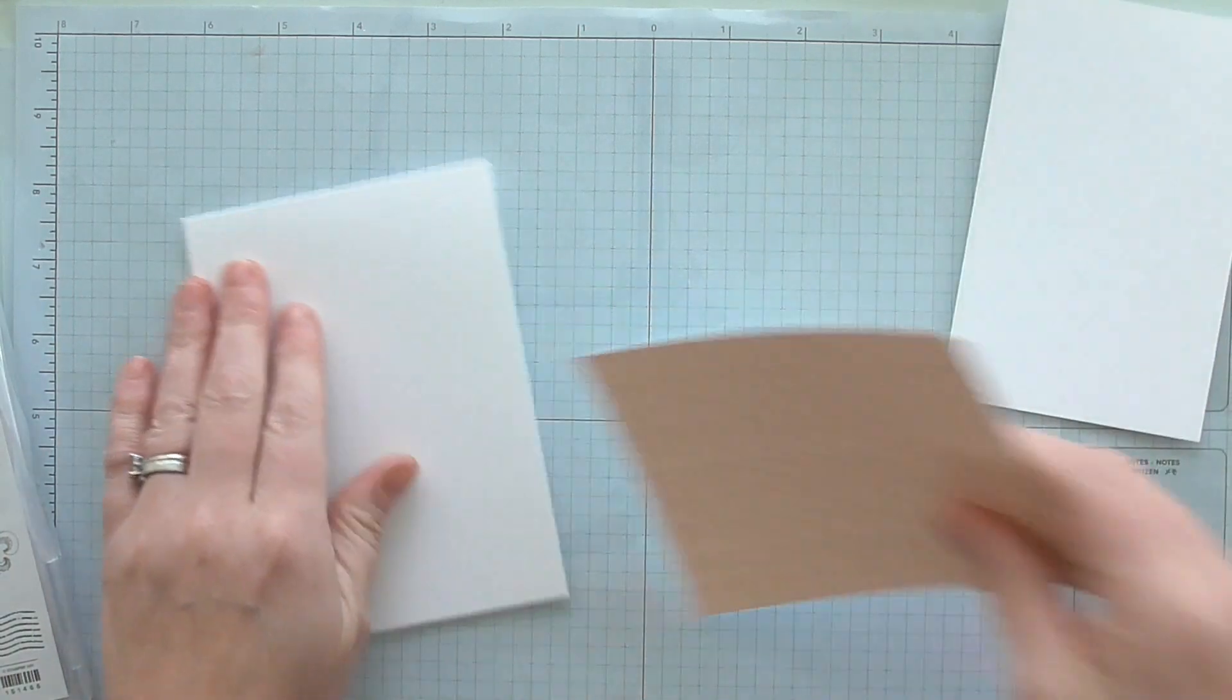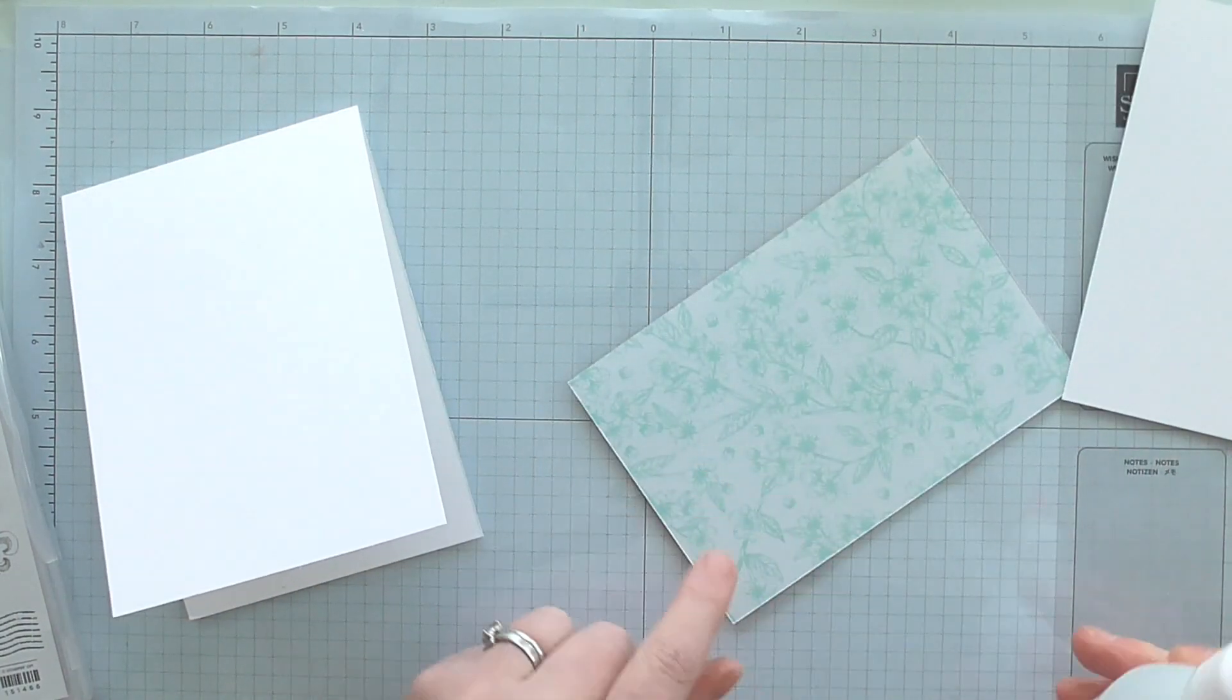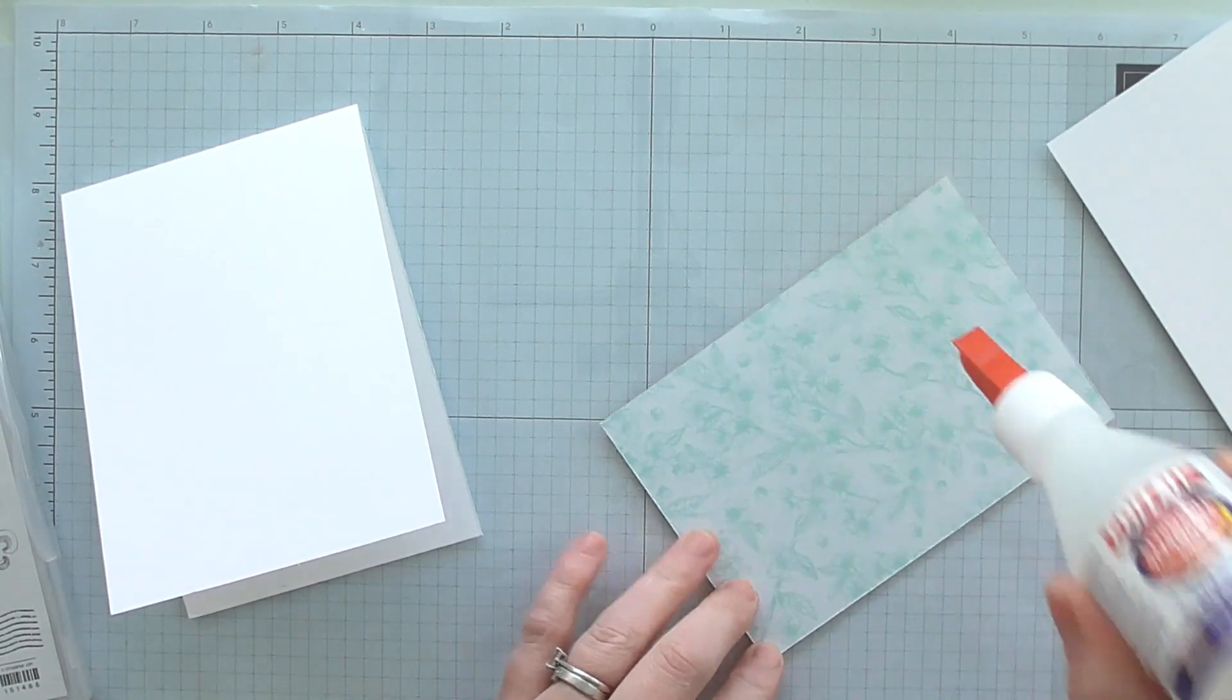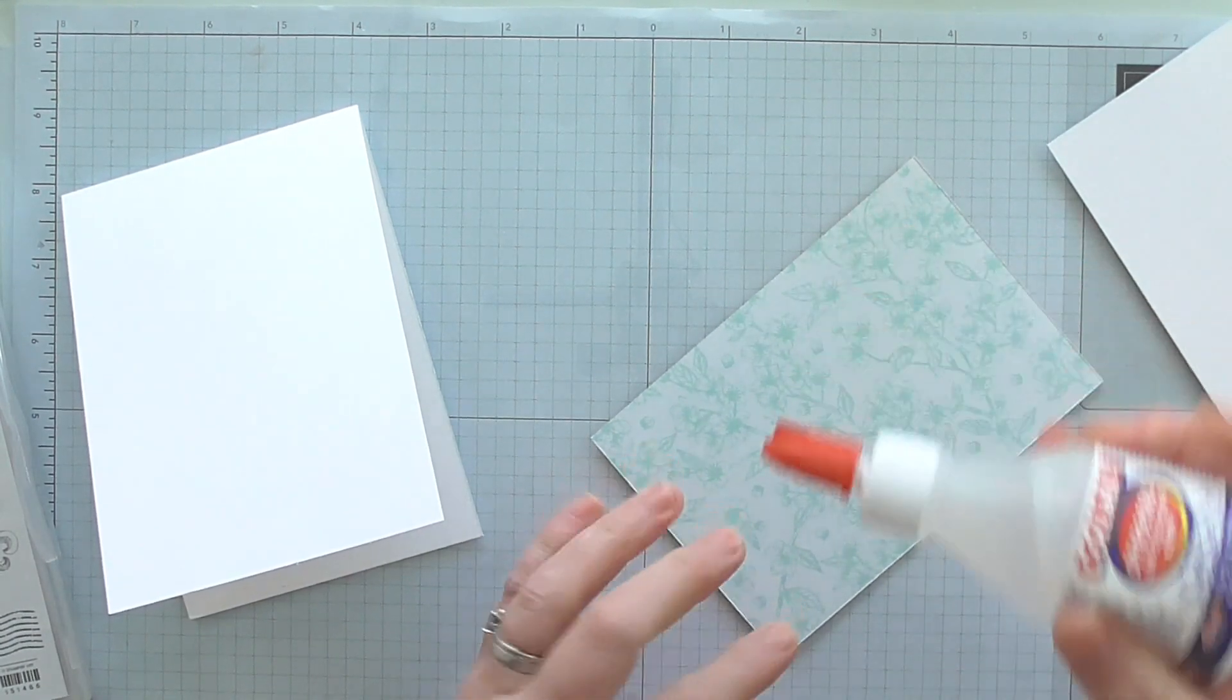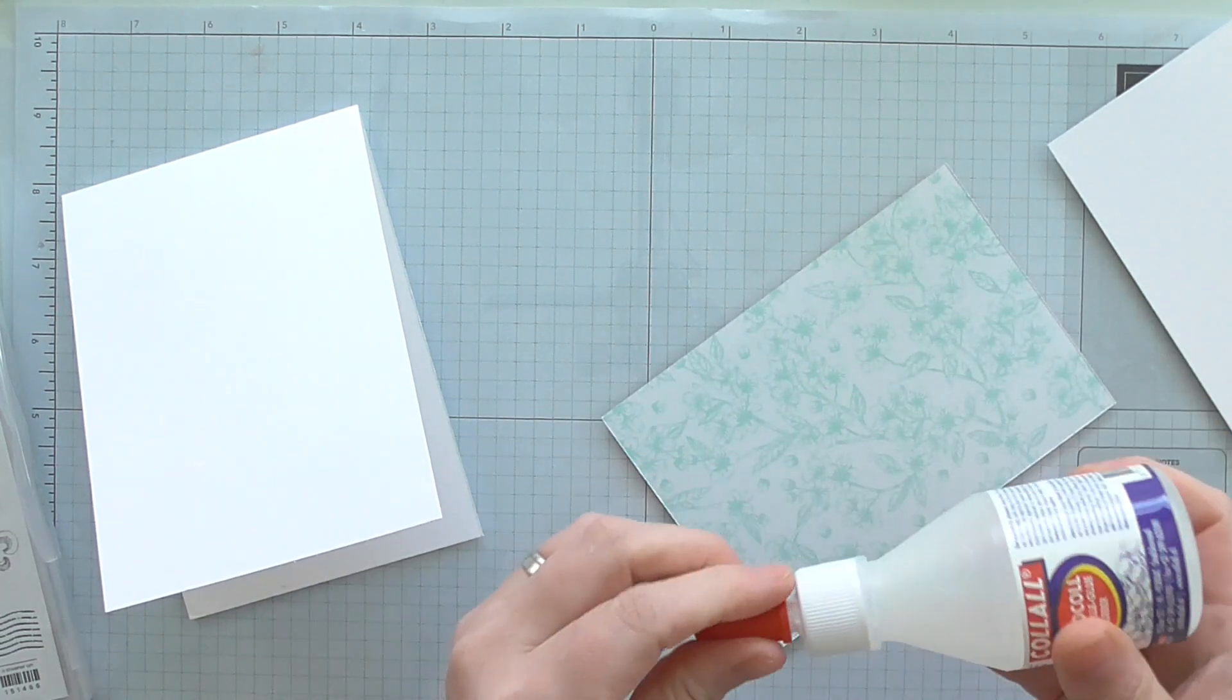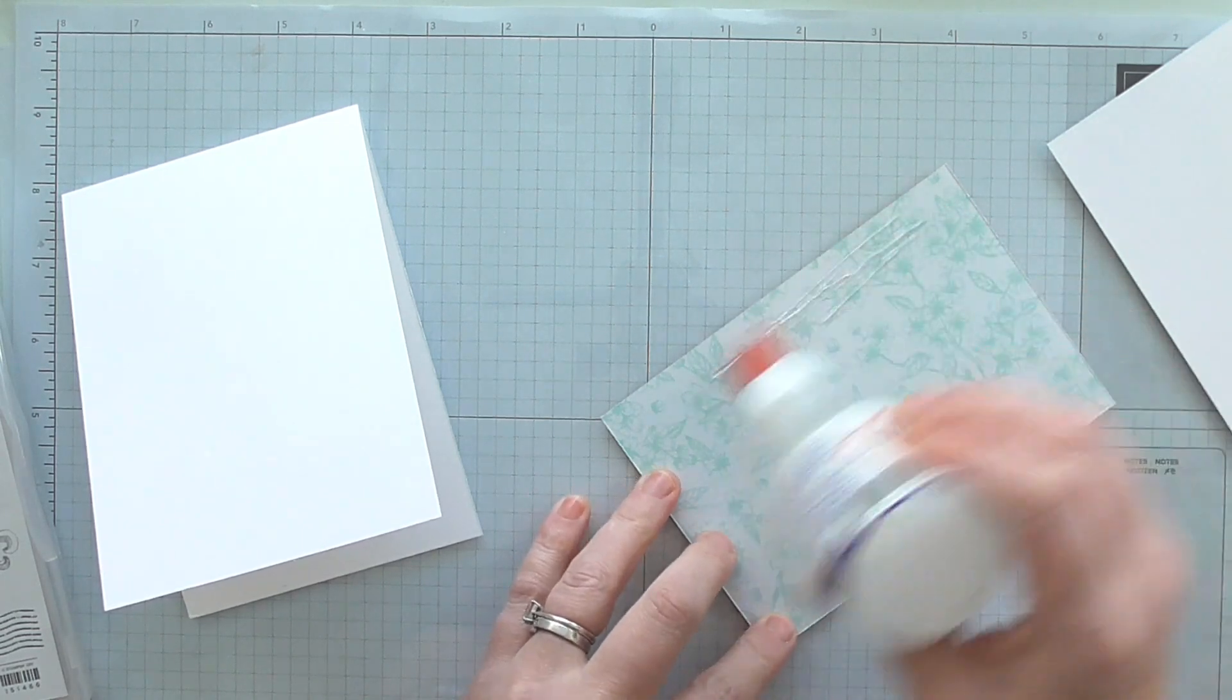So what I'm going to do first of all is glue my DSP onto my card. And don't forget this DSP is double sided, each side of every sheet in this stack is stunning. I don't think there's one that I don't like if I'm honest. They're all really beautiful and I'm using some quick drying glue today. This is non Stamping Up, I'm using it because it's got alcohol in it and it's meant to dry quicker.